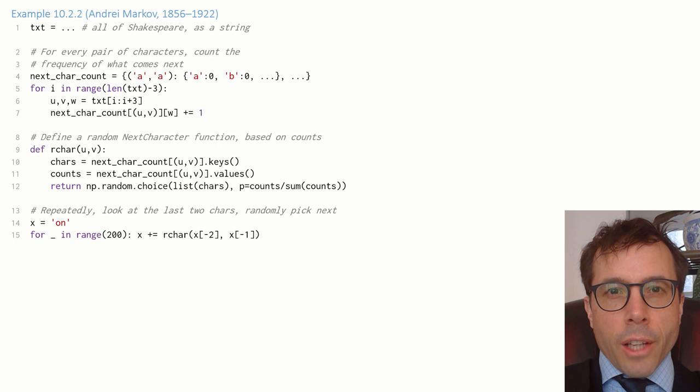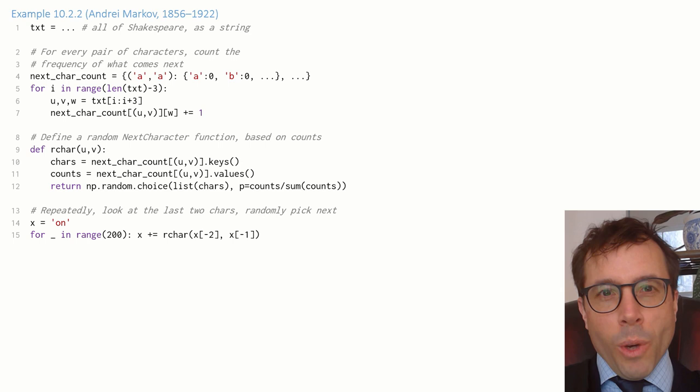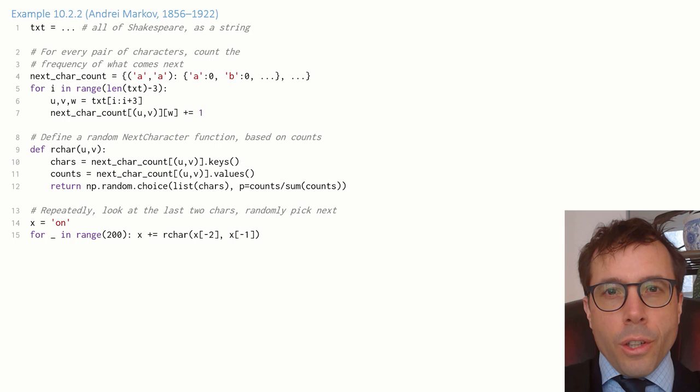Finally, to generate text, I'll seed it with two characters, for example, O and N. I'm thinking of Once Upon a Time, a good way as any to start a story. And then I repeatedly generate new characters by taking the last two that I generated and randomly synthesizing a new one.